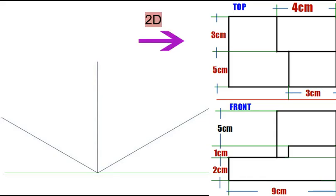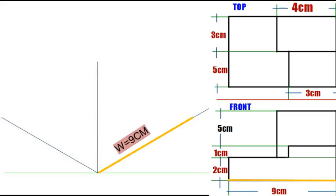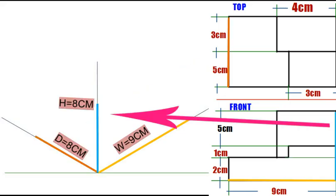Now, let's create an isometric box based on a given 2D drawing. The dimensions we'll work with are: width equals 9 centimeters, depth equals 8 centimeters, and height equals 8 centimeters.